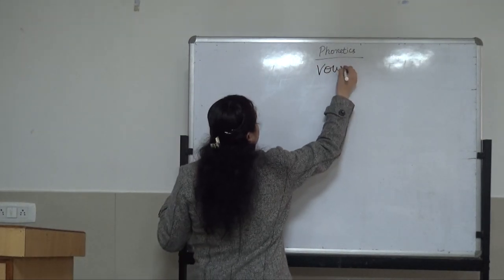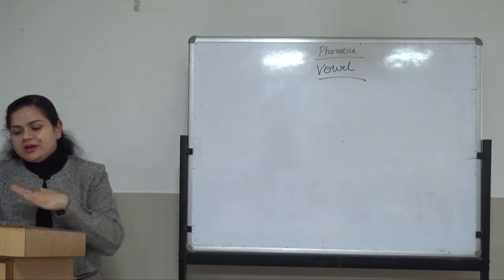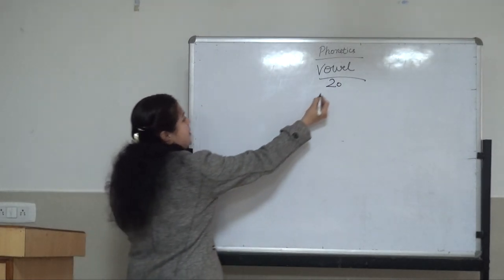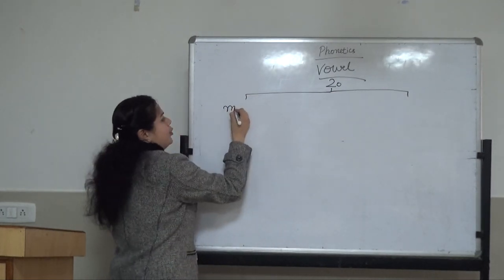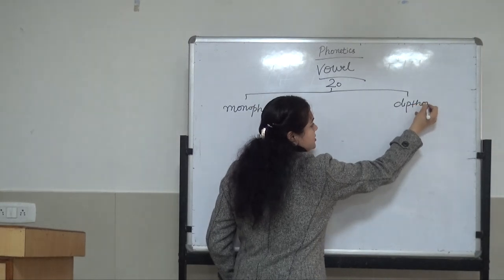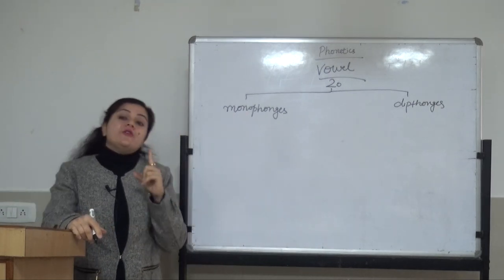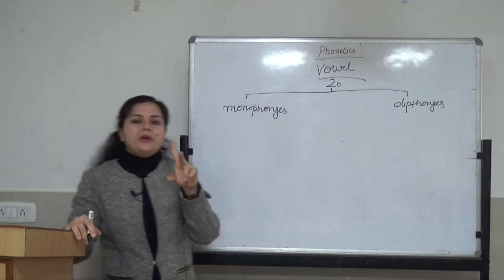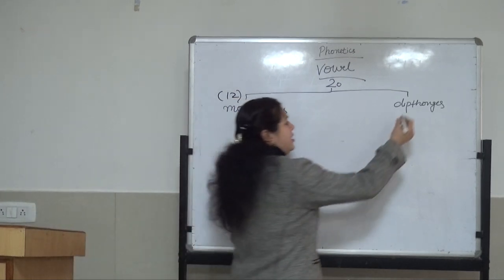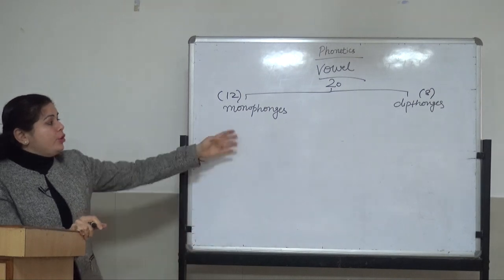Now we are moving towards vowel sounds. Vowel sounds can be divided into two parts: the first one is monophthong and the second one is diphthong. As we have discussed earlier, there are 20 vowel sounds which can be divided into two parts. There are 12 monophthongs and 8 diphthongs.